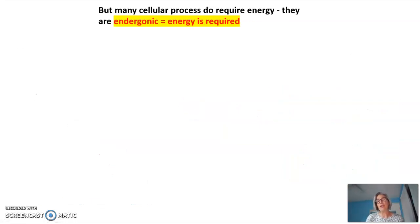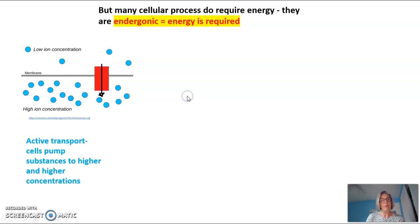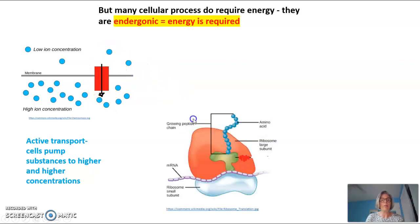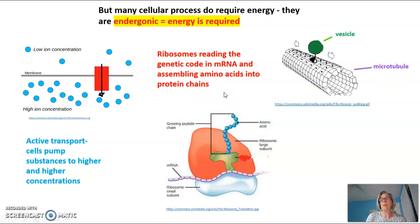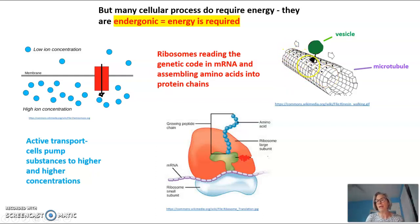But there are many cellular processes that do require energy. They are endergonic, meaning that energy is required. An example is active transport, where cells pump substances from a low concentration to a high concentration through a transport protein — that requires energy. Another example is when ribosomes read the genetic code in mRNA and assemble amino acids into a growing protein; this is a very expensive process. A final example is vesicles moving along microtubules using a motor protein, such as a transport vesicle moving from the RER to the Golgi, or a secretory vesicle moving from the Golgi to the plasma membrane — the motor protein takes energy to move that vesicle.